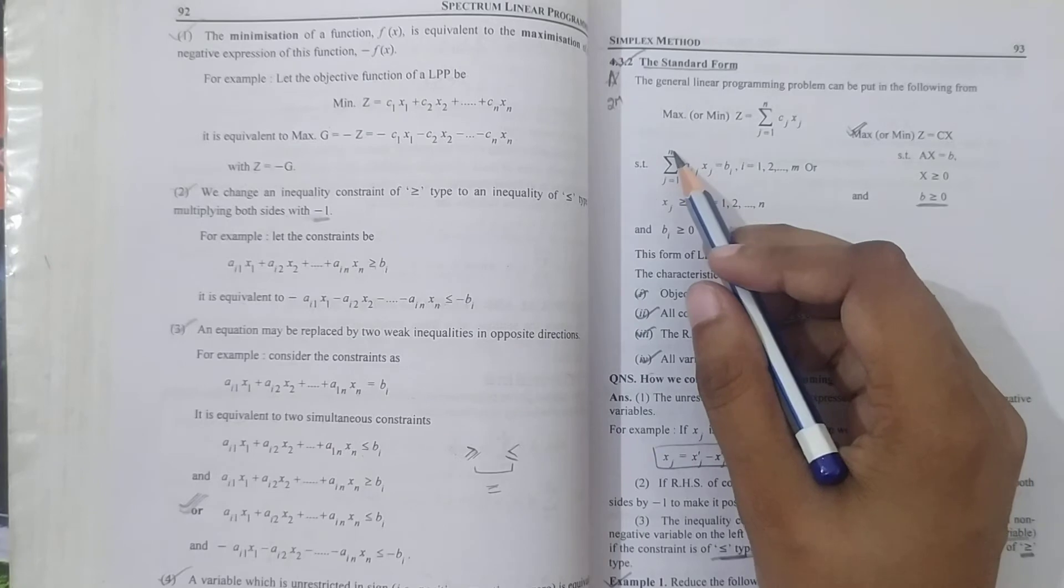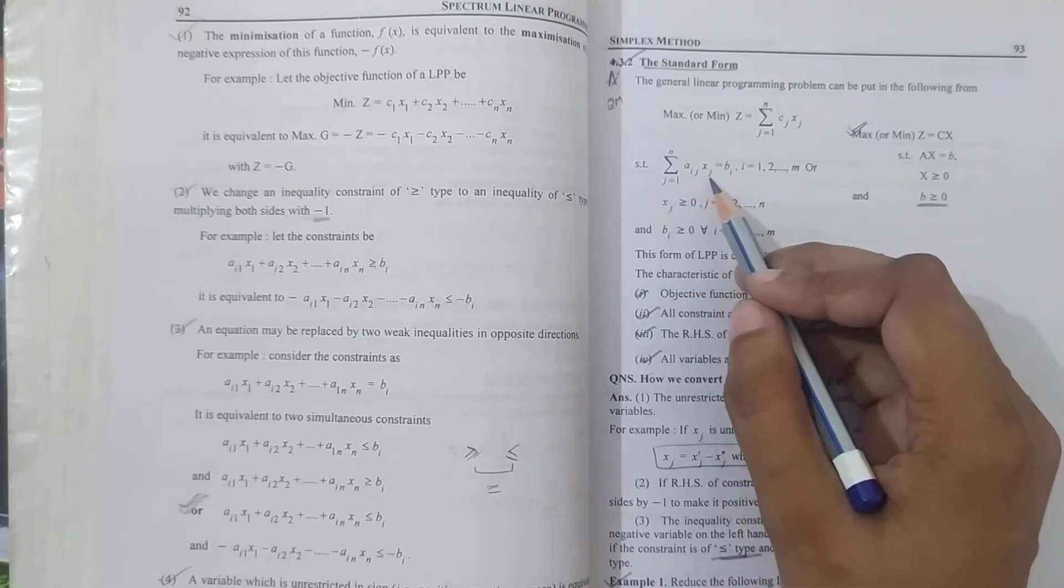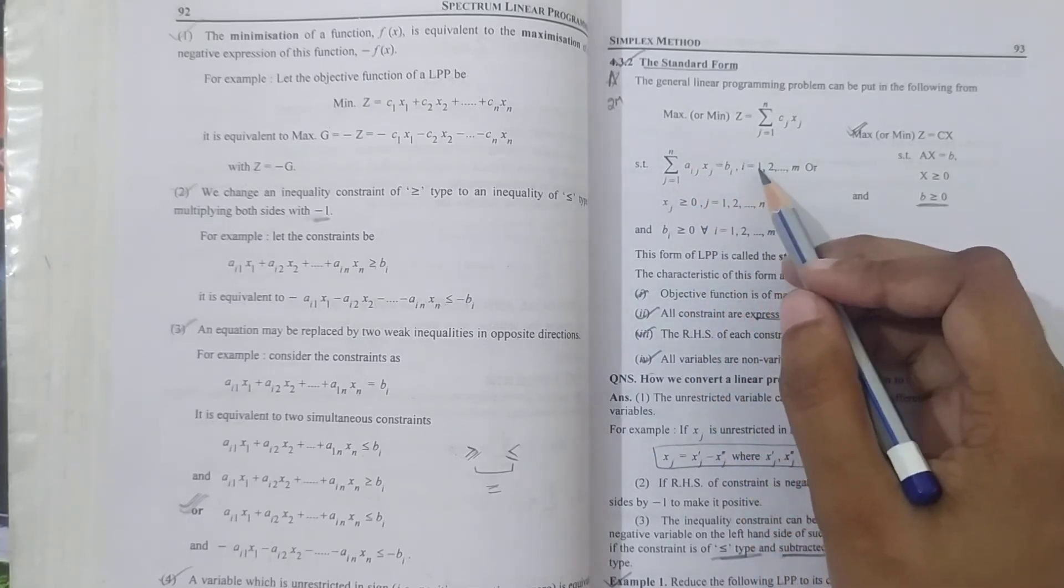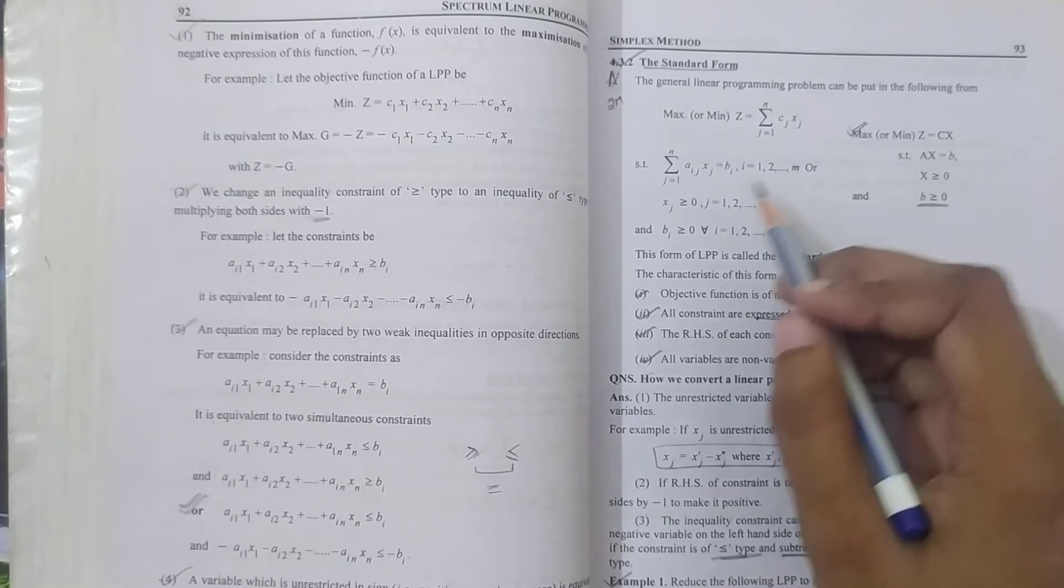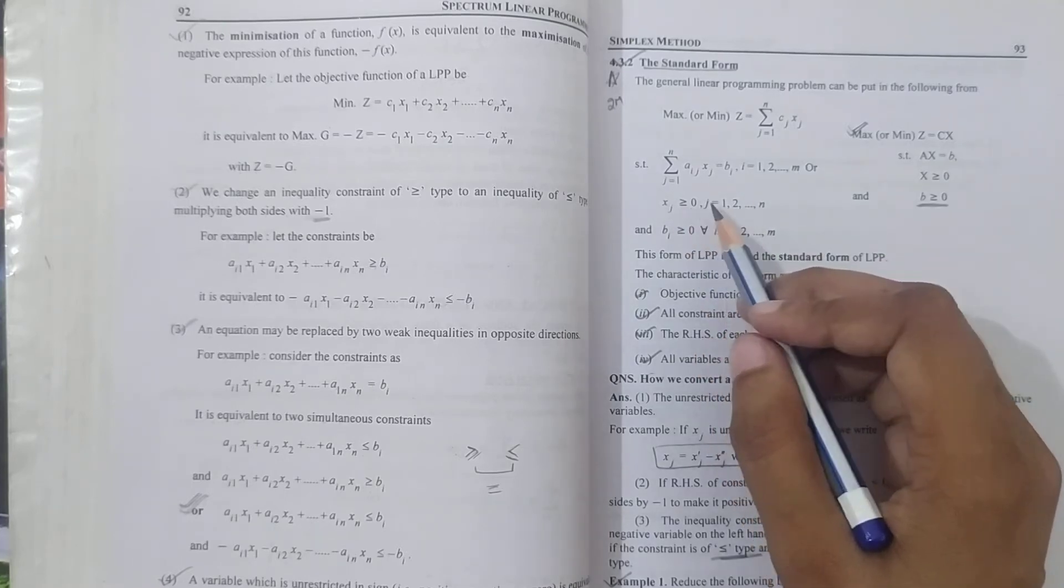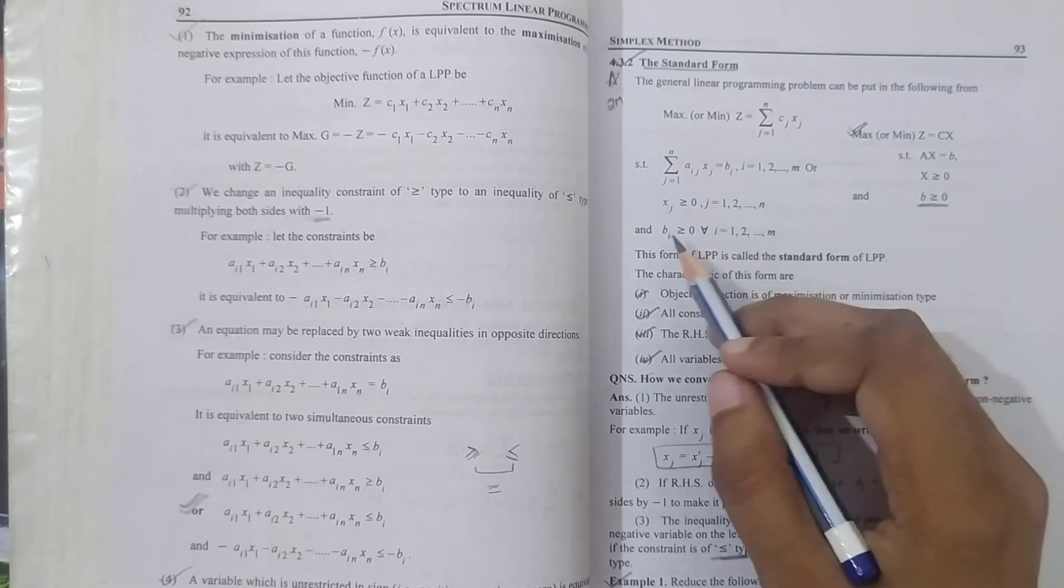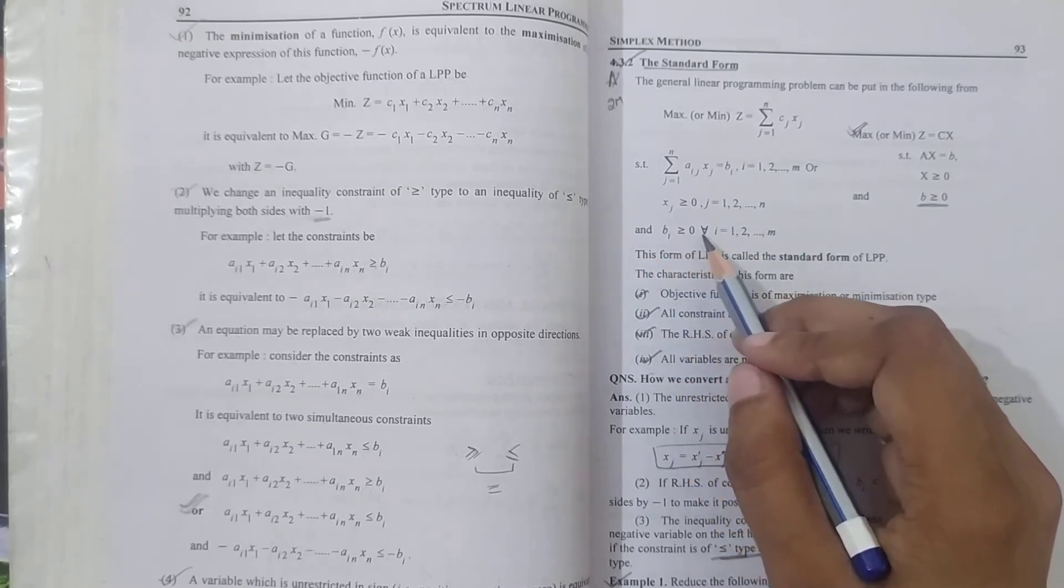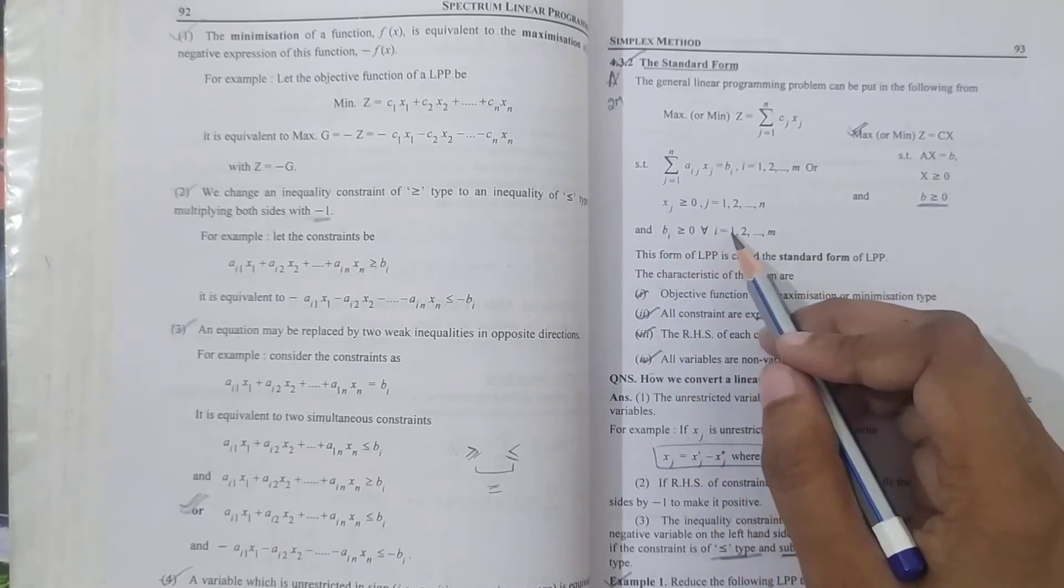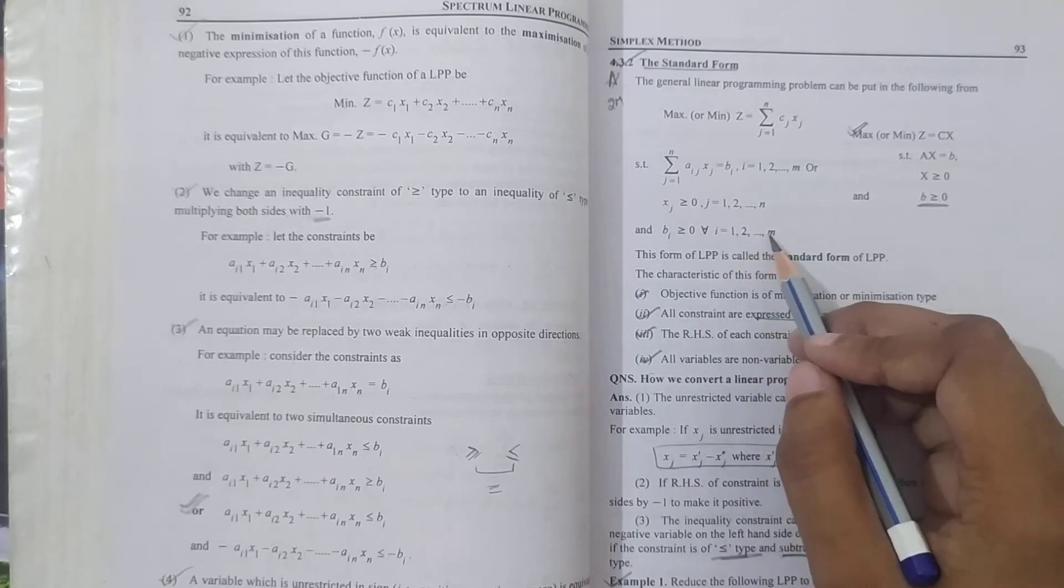Subject to summation j equals 1 to n of aij xj equals bi, where i equals 1, 2, 3 up to m, xj greater than or equal to 0 where j equals 1, 2, 3 up to n, and bi greater than or equal to 0 for all i belongs to 1, 2, 3 up to m.